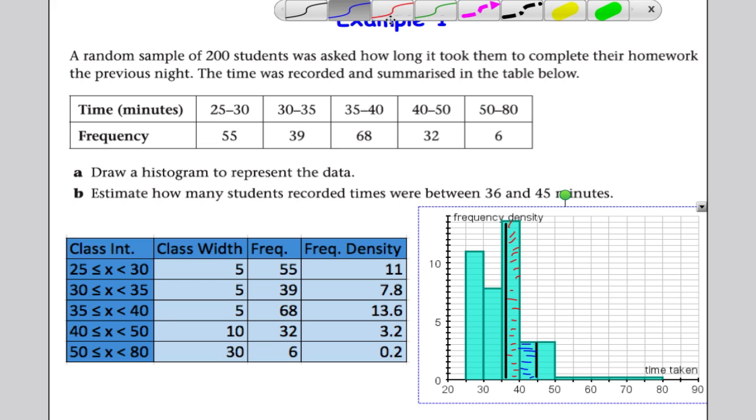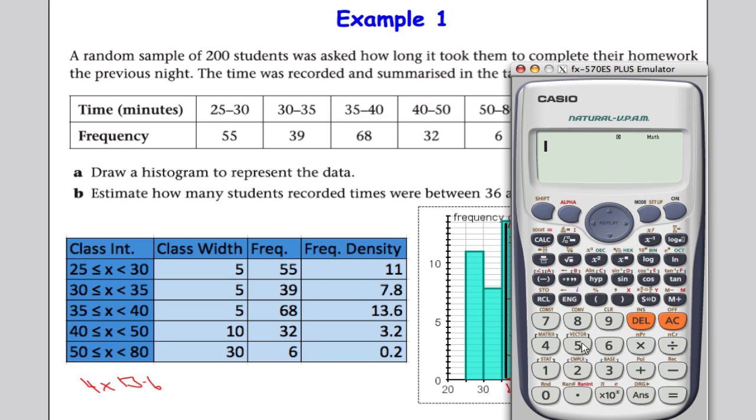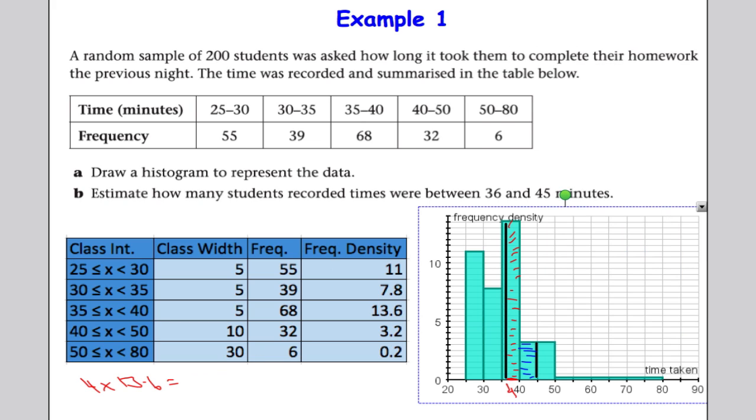How am I going to calculate that? I'm going to work out the area for each bar. The width of this bar goes from 36 to 40, which is 4. And the height of the bar, we can see, is 13.6. So it's 4 in width multiplied by the height, which is 13.6. Let's bring out the calculator. 4 multiplied by 13.6 gives me 54.4.